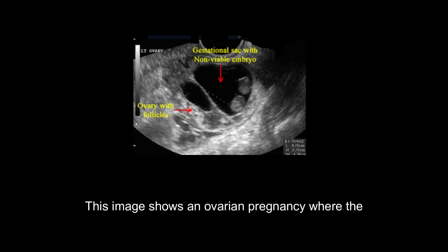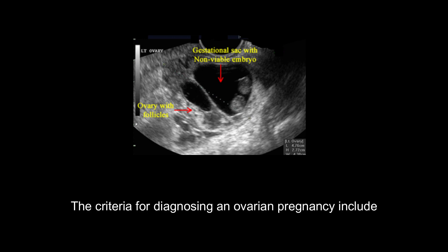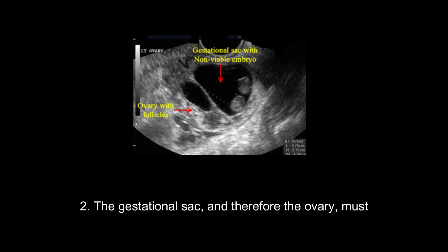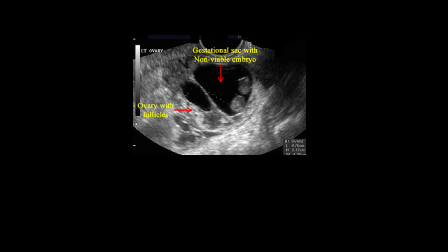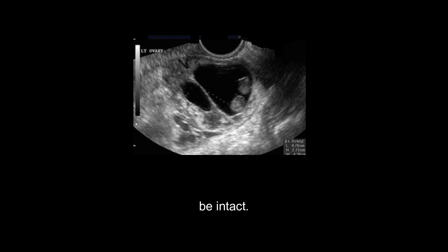This image shows an ovarian pregnancy where the embryo inside the gestational sac within the ovary is non-viable. The criteria for diagnosing an ovarian pregnancy include: 1. The pregnancy occurs in its usual position within the ovary. 2. The gestational sac, and therefore the ovary, must be attached to the uterus by the ovarian ligament. 3. The wall of the gestational sac must contain ovarian tissue that is histologically proven. 4. The fallopian tube on the affected side must be intact.